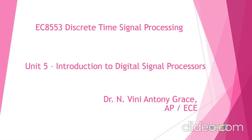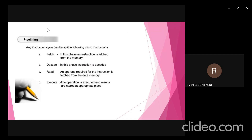Good morning students. In this video we are going to learn about one of the important features of a DSP processor named pipelining. Any instruction cycle, whenever an instruction is executed, it falls into one of four phases. There are four phases of execution of any particular instruction: fetch, decode, read, and execute.